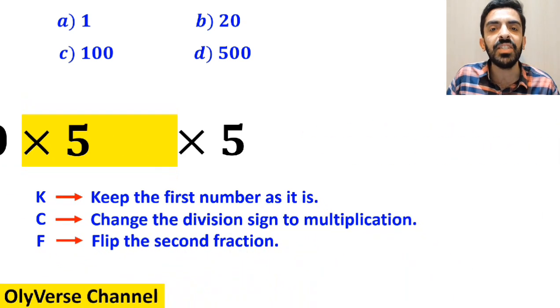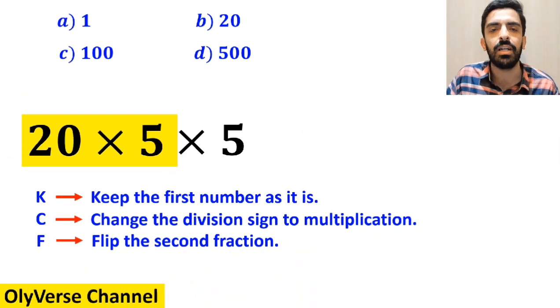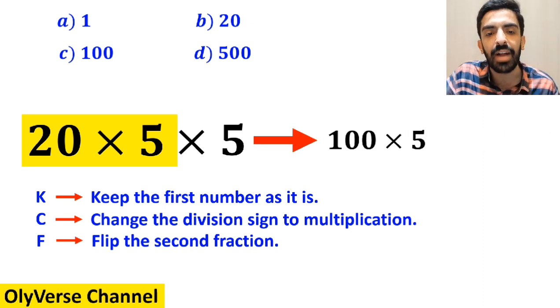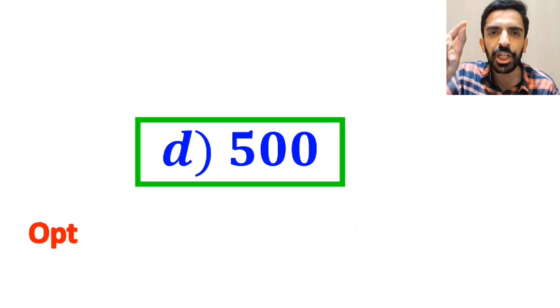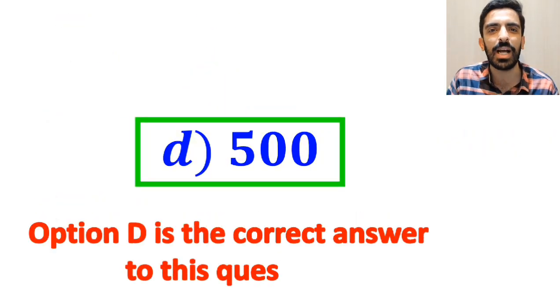So, remove the highlighted part and replace it with 20 multiplied by 5. Now, this expression simplifies to 100 times 5, which ultimately gives us the answer 500. Therefore, option D is the correct answer to this question.